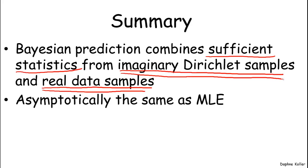Now, as the amount of data increases, that is, at the asymptotic limit of many data instances, the term that corresponds to the real data samples is going to dominate.